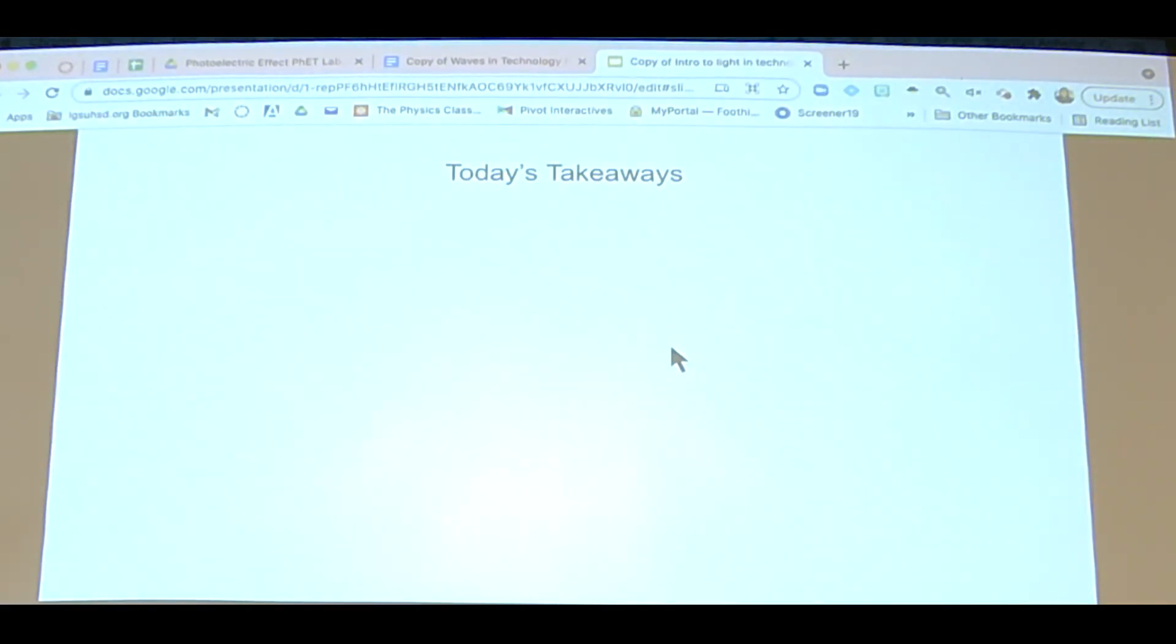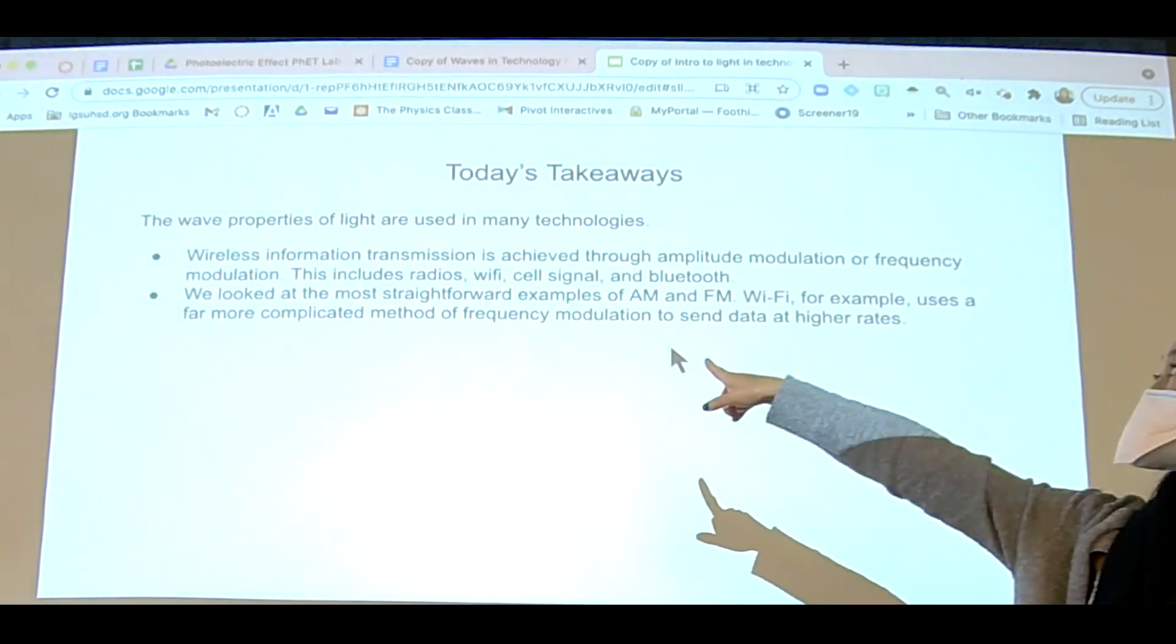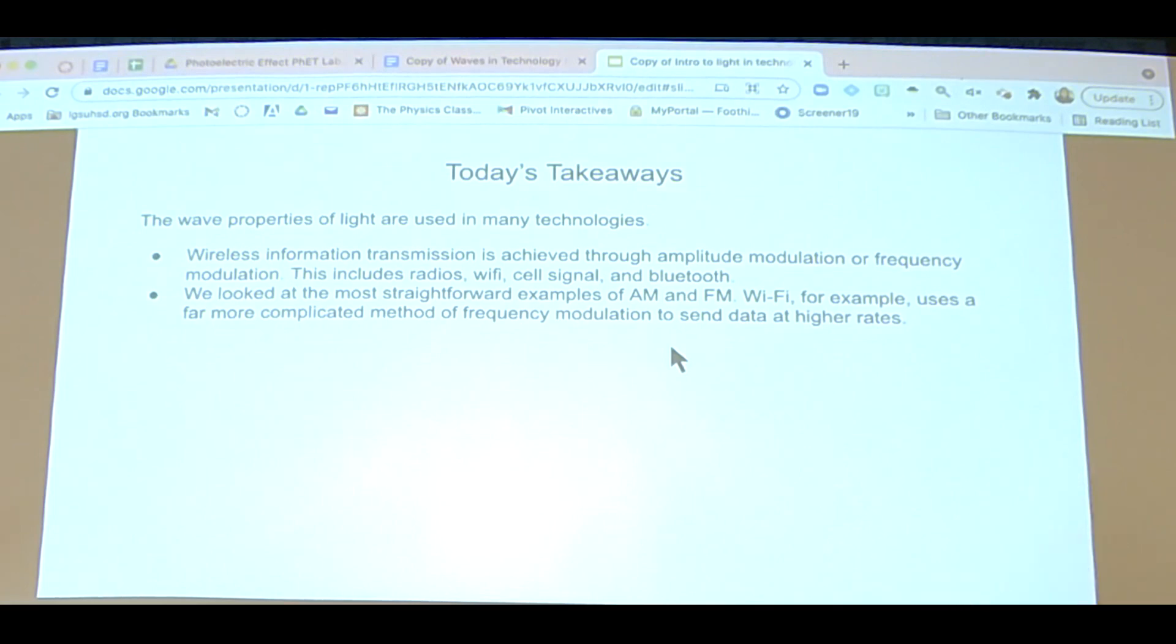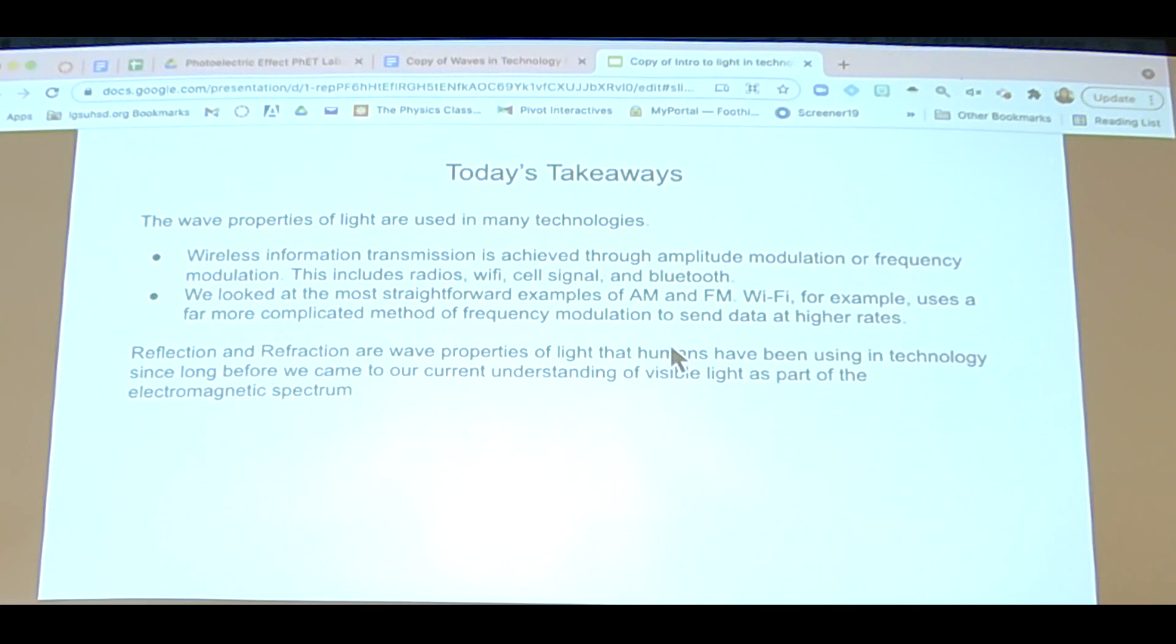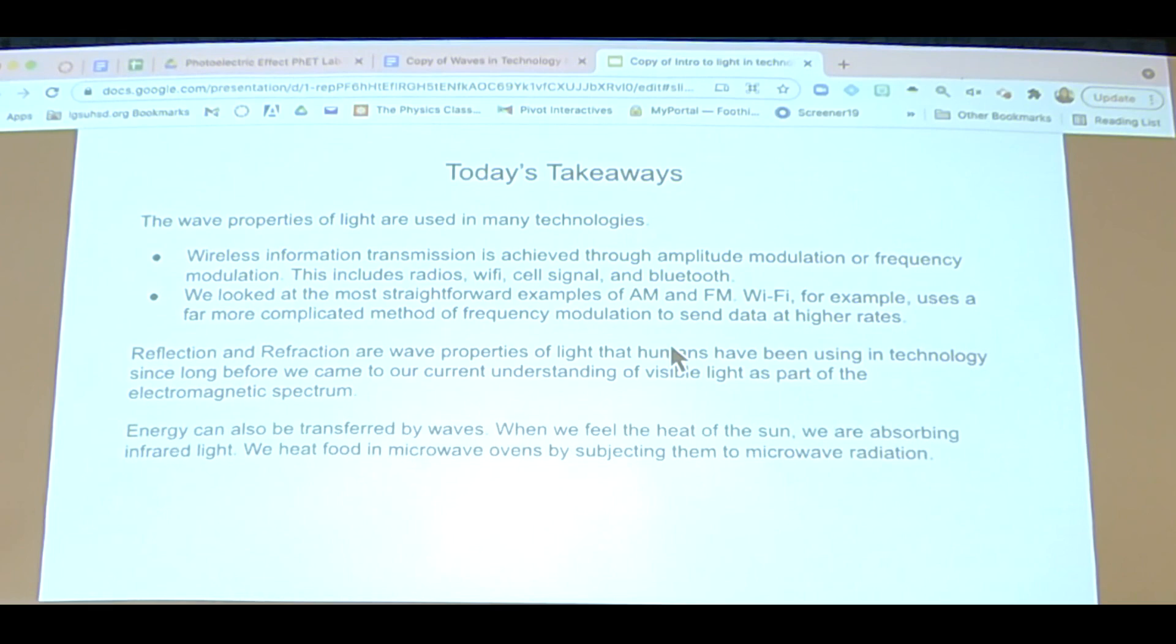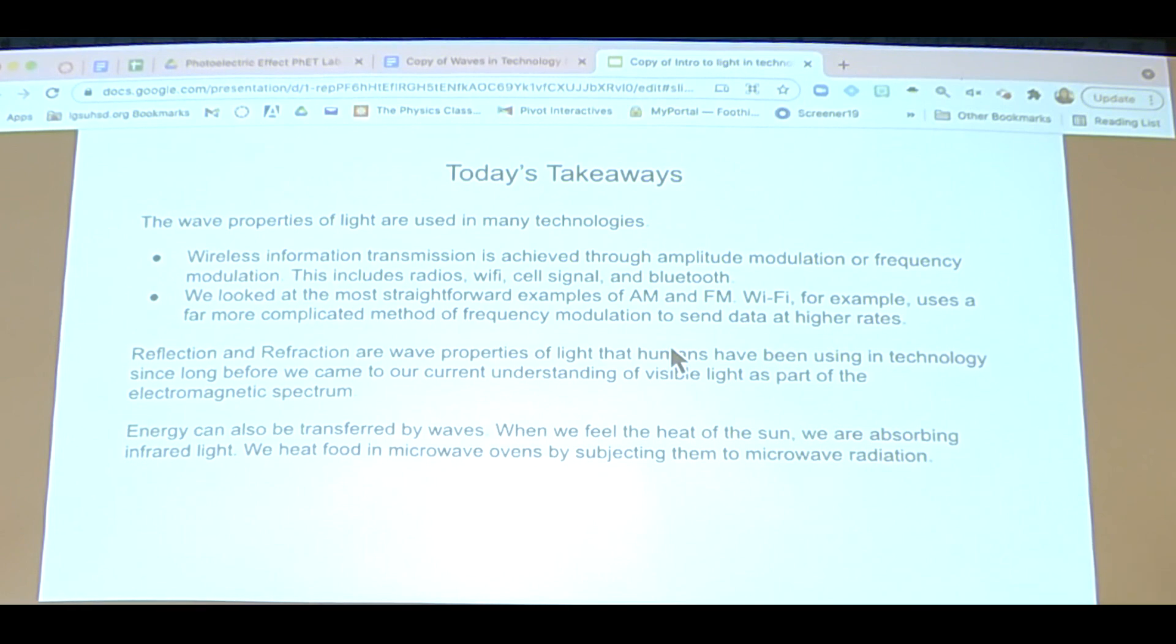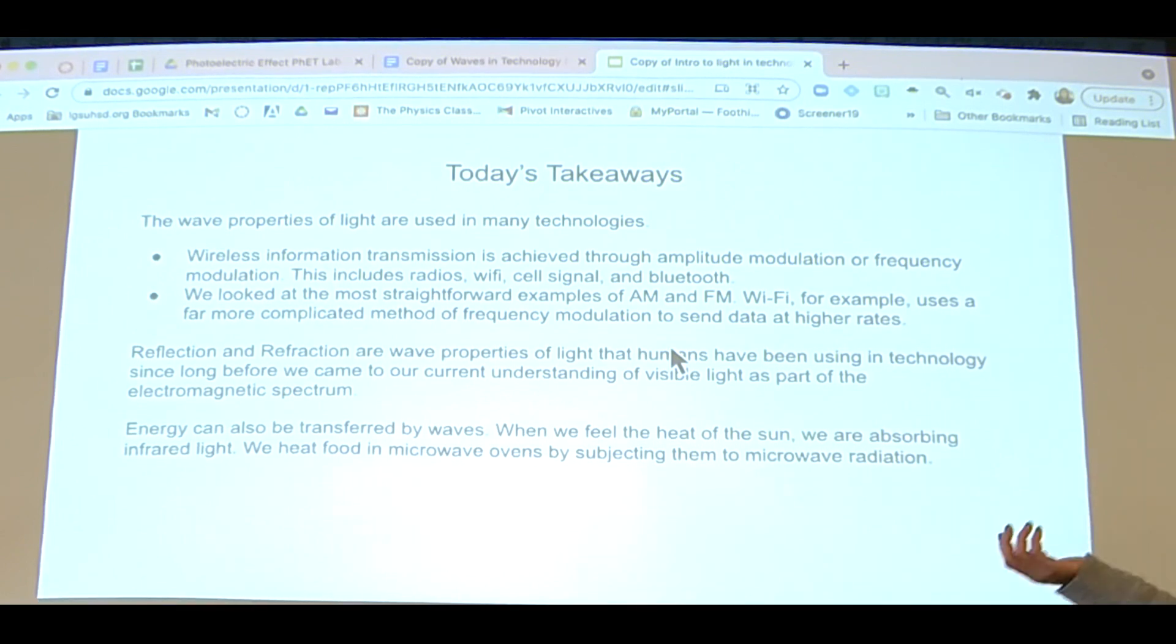The takeaways, basically, wave properties of light are used in technology three different ways: to transfer information, whether it's cell phones, radio waves, or Wi-Fi; to adjust images using reflection and refraction, that's lens technology; and then you've also got energy transfer in terms of x-rays, UV rays, solar panels, and microwaves.